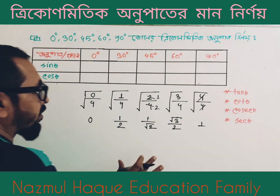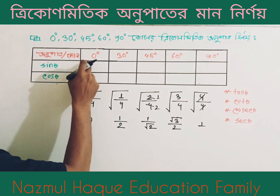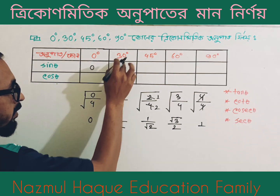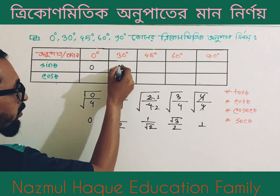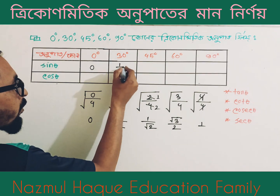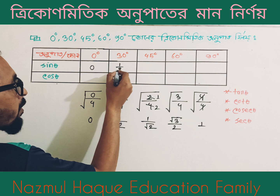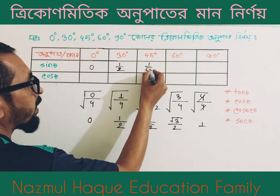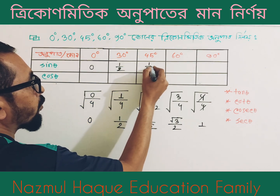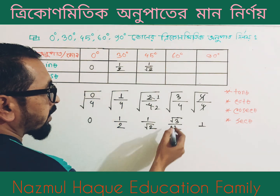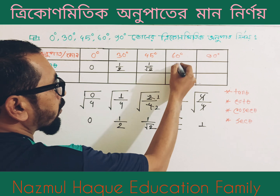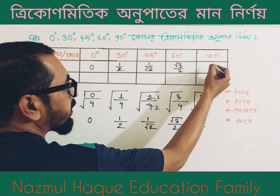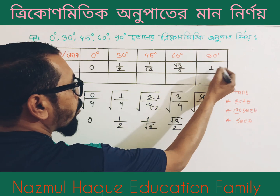Sin 0 degree is 0. Sin 30 degree is 0. Sin 45 degree is 1 divided by root 2. Sin 60 degree is root 3 divided by 2. And sin 90 degree is 1.